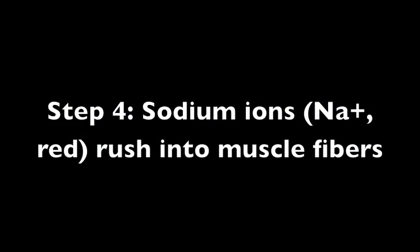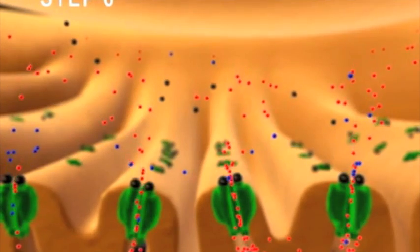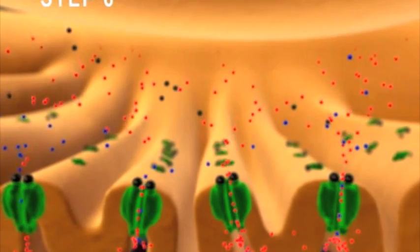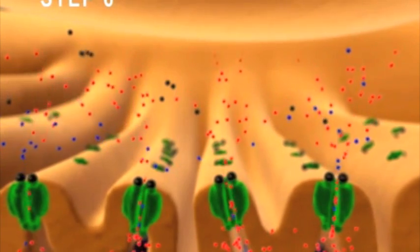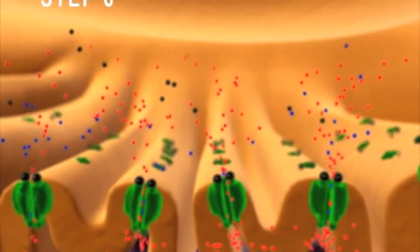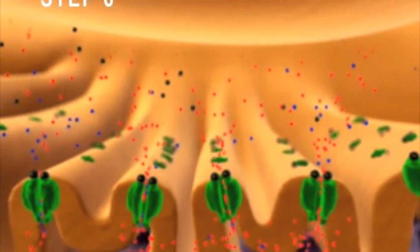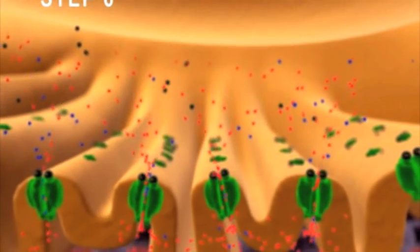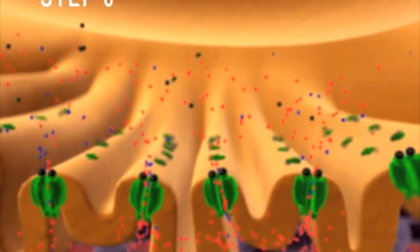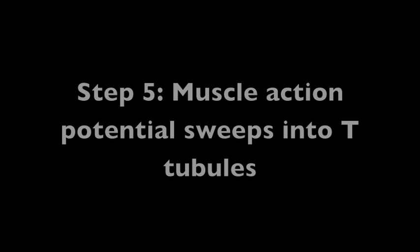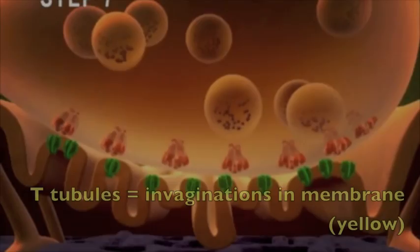Step 4: Sodium ions rush into muscle fibers. Step 5: Muscle action potential sweeps into T-tubules.